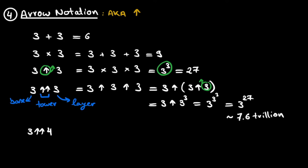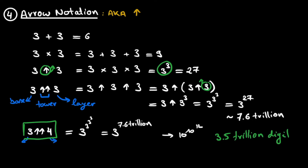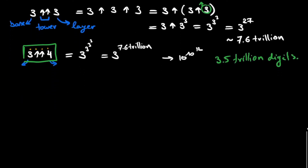We can apply this to 3 double up arrow 4: the base number is 3, we have a tower of exponents, and the 4 indicates 4 layers. So we get 3 to the power of 3 to the power of 3 to the power of 3. We know the exponent — 3 to the power of 3 to the power of 3 — is roughly 7.6 trillion. This means we get 3 to the power of 7.6 trillion. At this point we've already reached the largest number up to now — a number with 3.5 trillion digits.